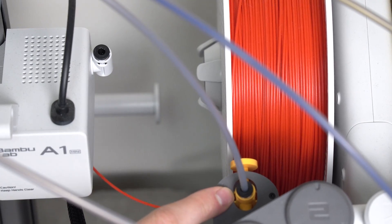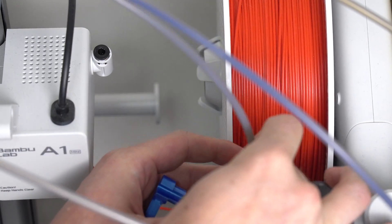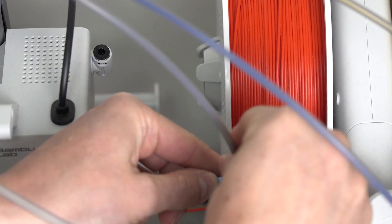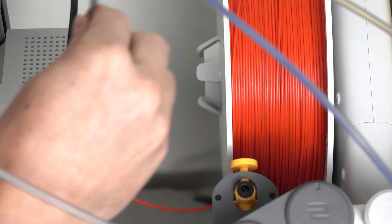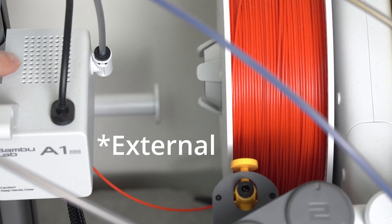Now that there's no filament in the tube, we can either just press down on the black part with our fingers and pull the tube out, or you can also use one of these little tools that make it a little bit easier. Push down, pull out, and then you just transfer the tube over to the internal filament spool.